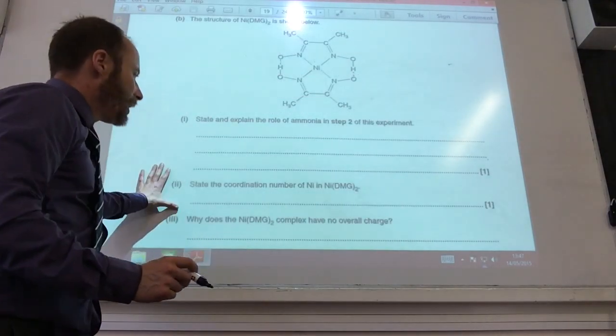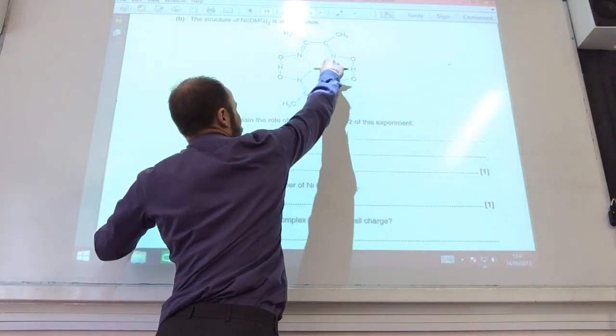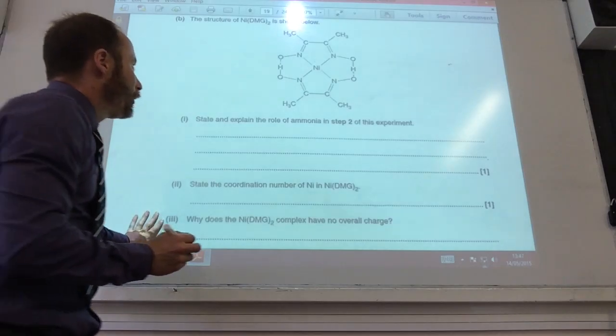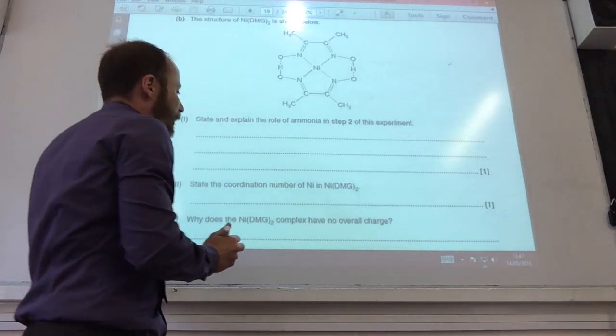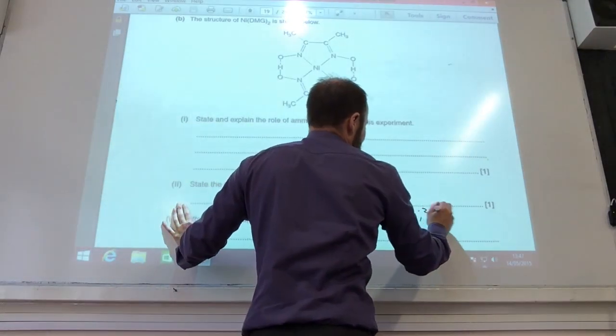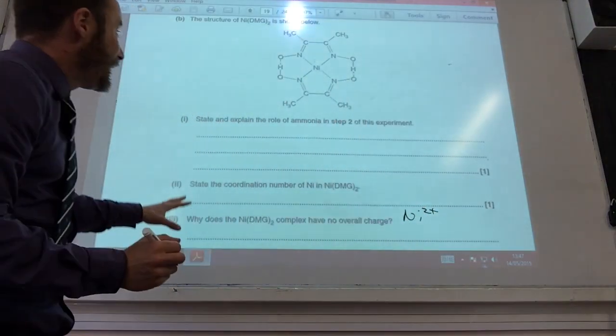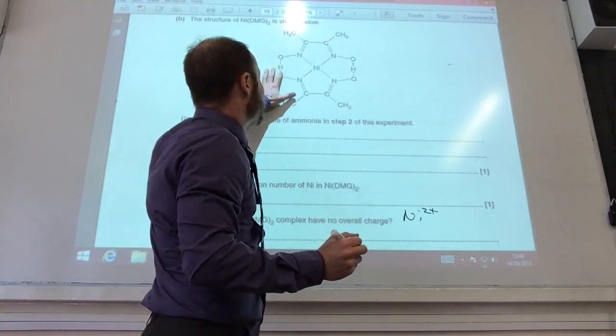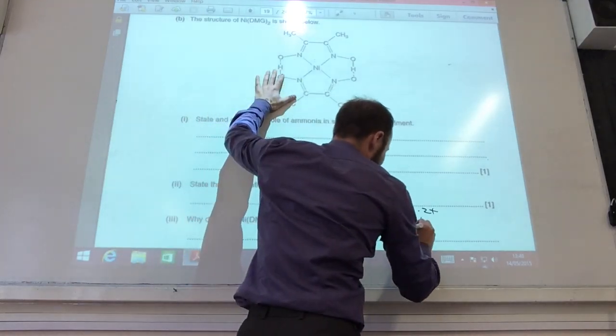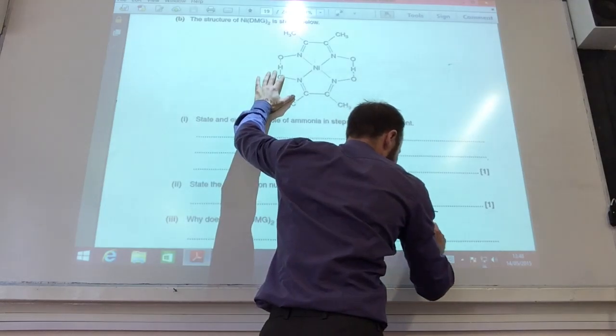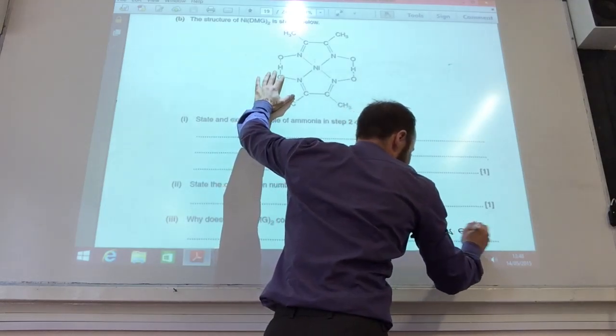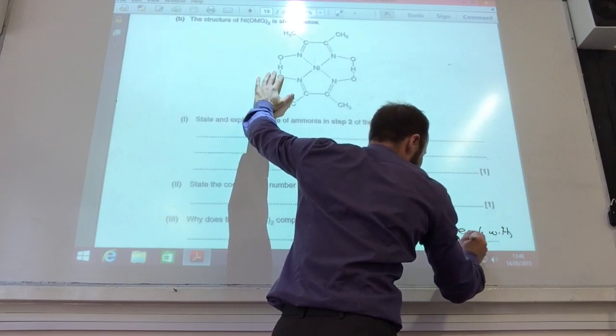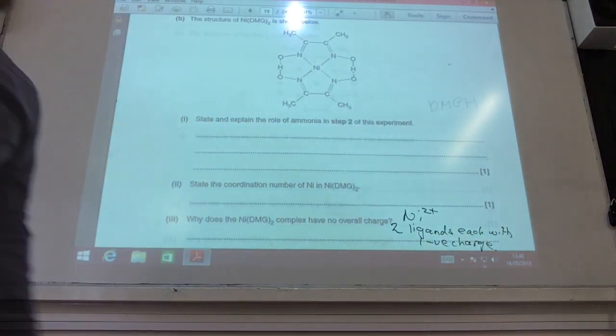What is the coordination number of nickel? Okay. One, two, three, four. Four coordinate bonds. So it's actually four. Why does it have no overall charge? Well, it's because we've got nickel as being nickel two plus. This ligand here has got each ligand with a minus charge attached. So I've got two of these ligands each with one negative charge. So they cancel each other out. Right.